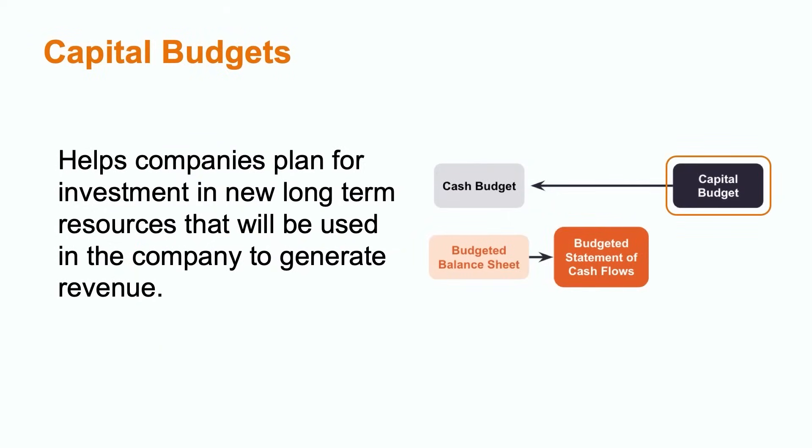The capital budget helps companies plan for investment in new long-term resources that will be used to generate revenue. These are things like assets the company is planning to purchase such as new property, equipment, or vehicles. Once approved, the organization will need to ensure that they have plans in place to obtain the cash required to make these purchases throughout the upcoming year.